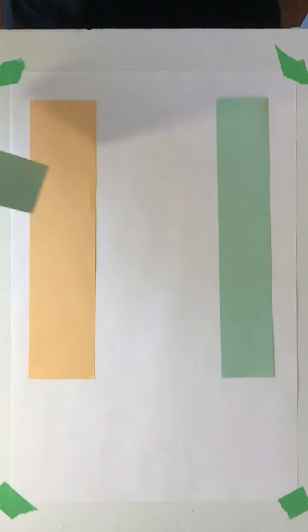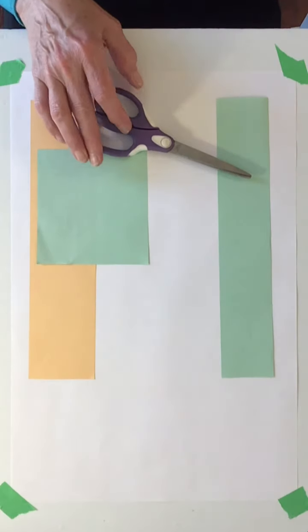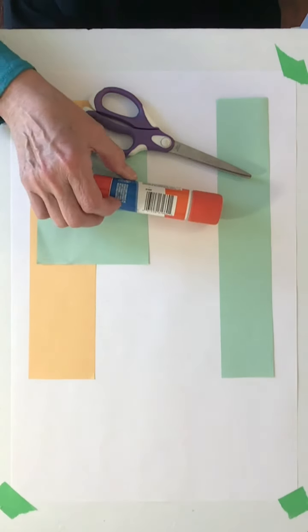The first thing you'll need is a strip of paper for your stem. You'll also need a strip of paper for your flower petals and a square of paper for your leaves. You're going to use scissors and a glue stick.